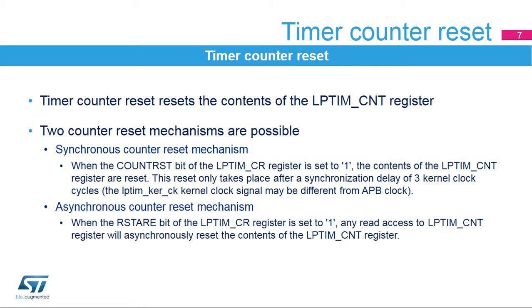The low-power timer features a counter-reset function used to reset to zero the contents of the LP-TIM-CNT register. Two counter-reset mechanisms are possible: the synchronous counter-reset mechanism and the asynchronous counter-reset mechanism. A synchronous counter-reset is performed by setting the COUNT-RST bit, and due to its synchronous nature, it only takes place after a synchronization delay of three LP-TIM kernel clock cycles. When the RST-ARE bit is set, an asynchronous counter-reset is performed on the next APB read access to the LP-TIM-CNT register.